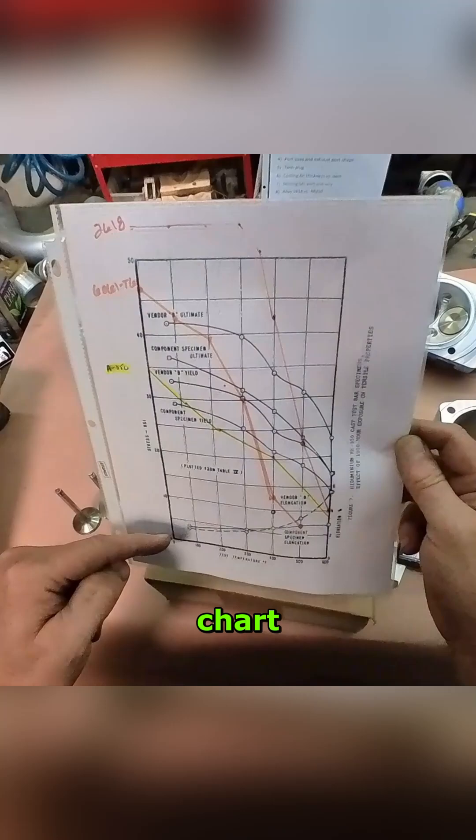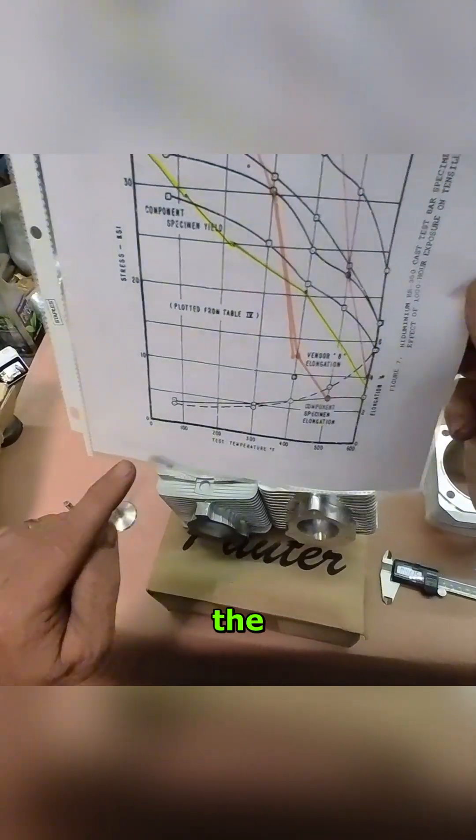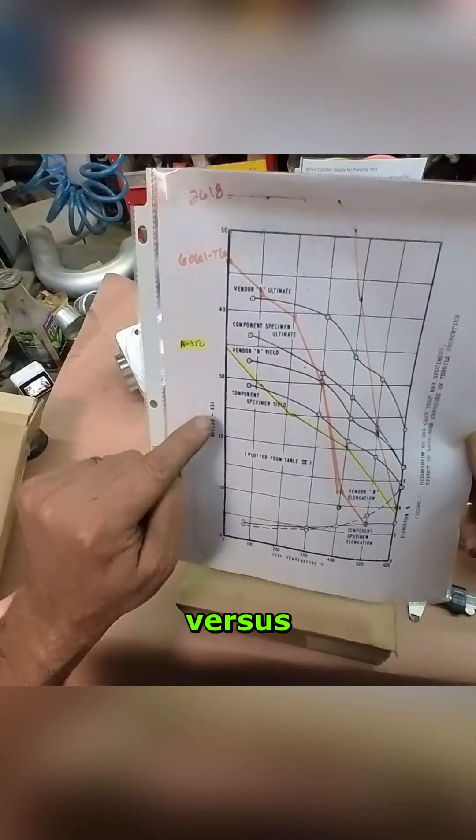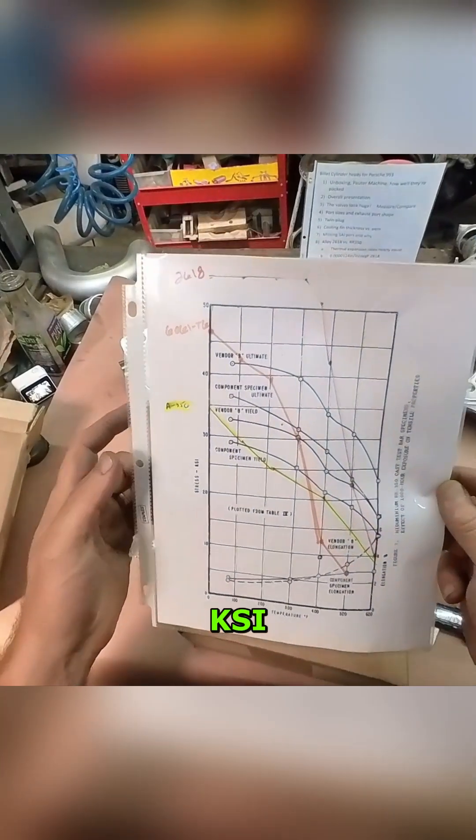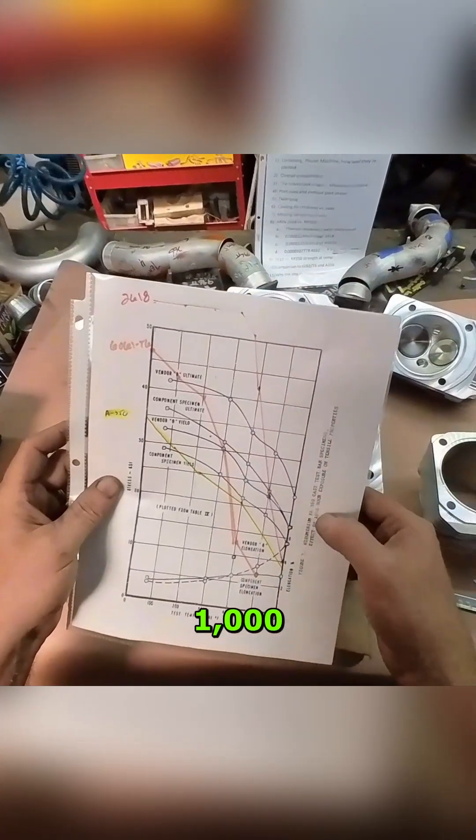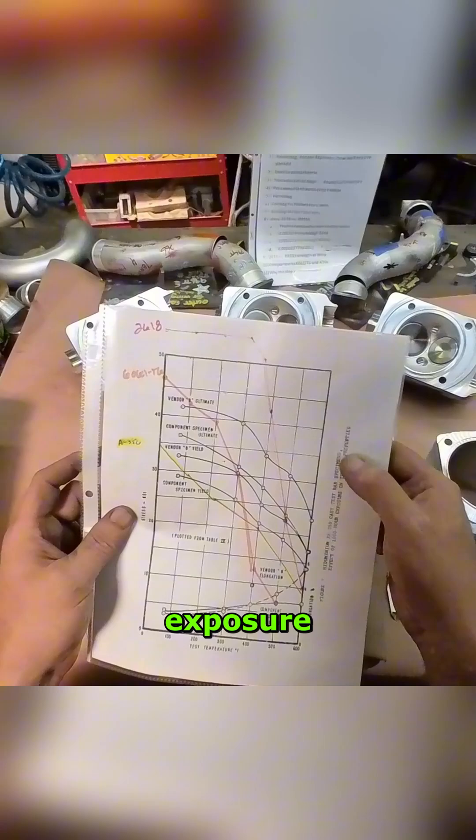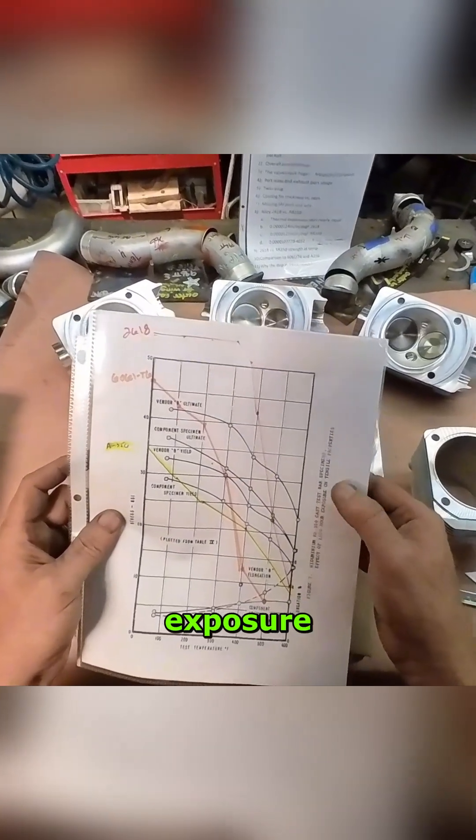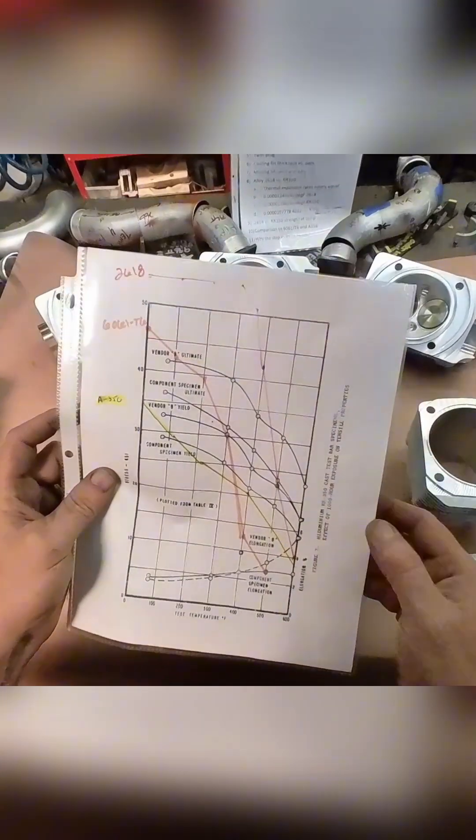What this chart is explaining is the test temperature versus the stress in KSI. That's for a thousand hours of exposure, and that's the thousand hour exposure effect on the tensile strength properties.